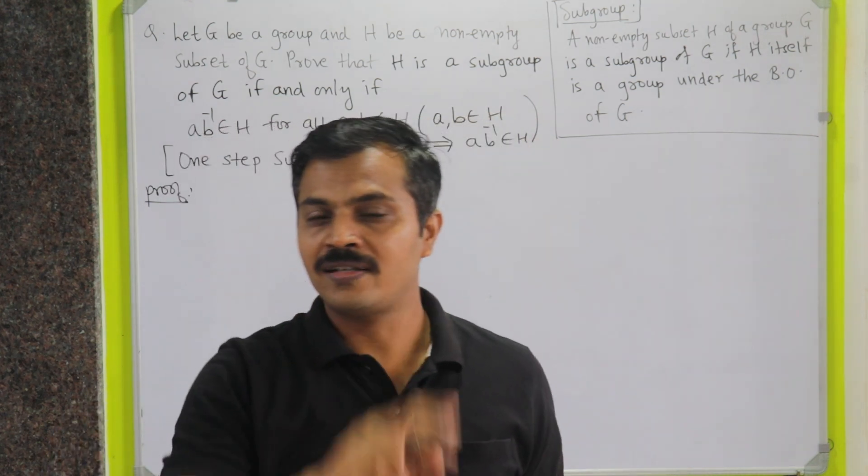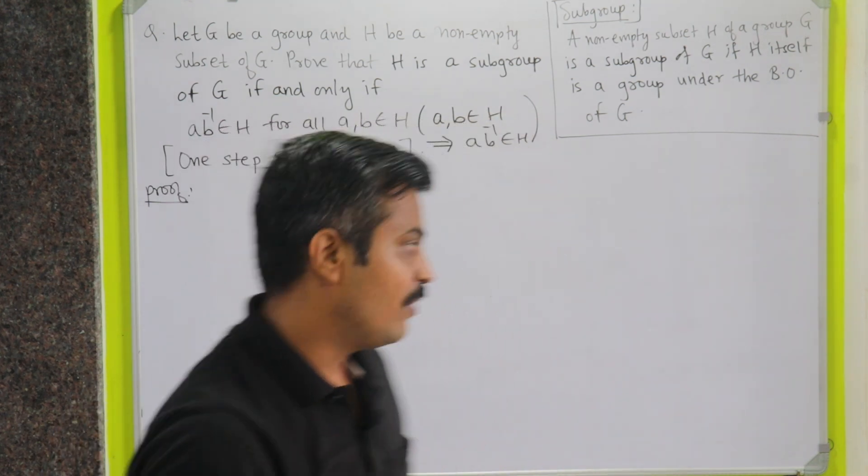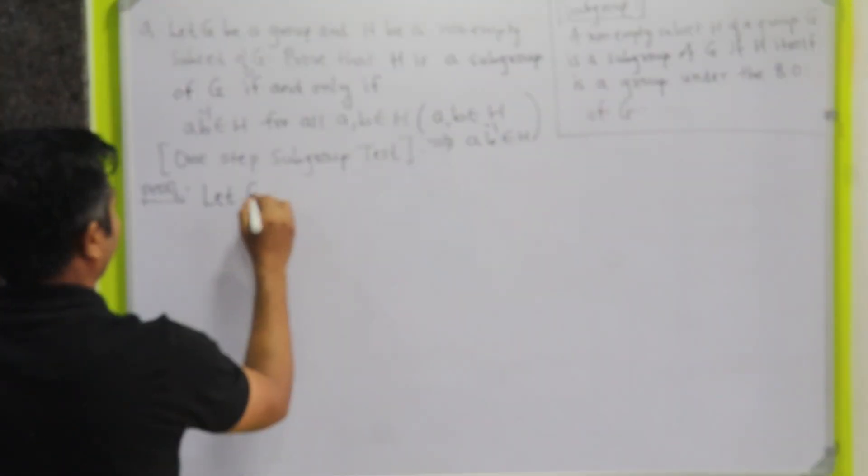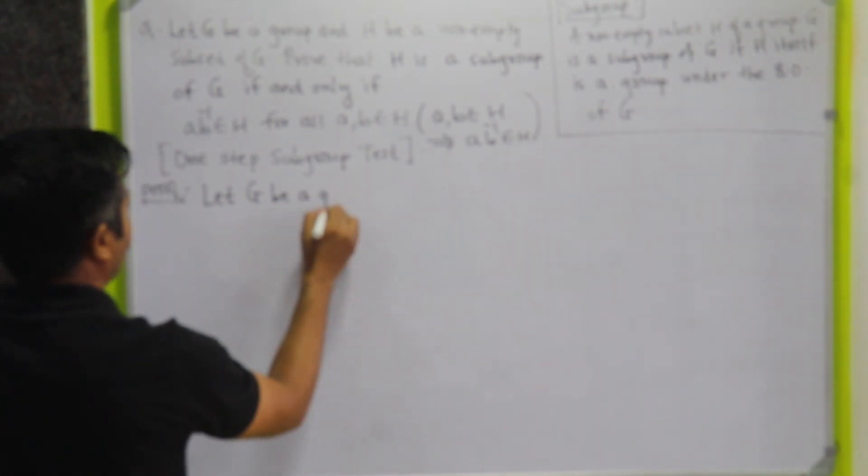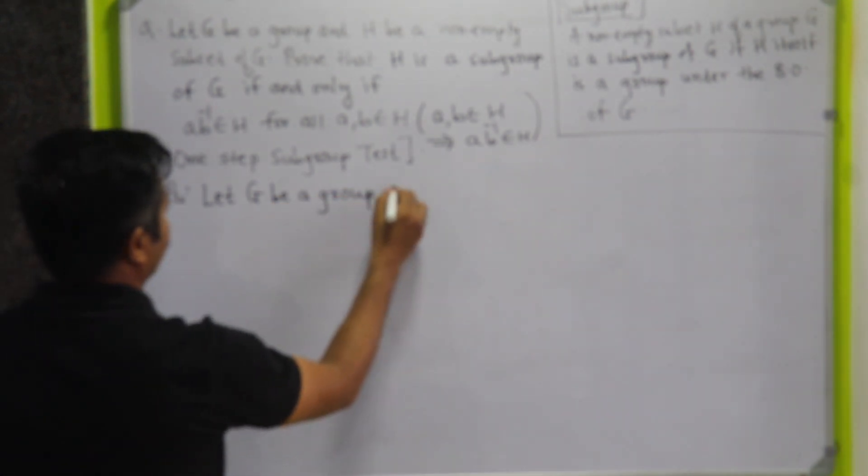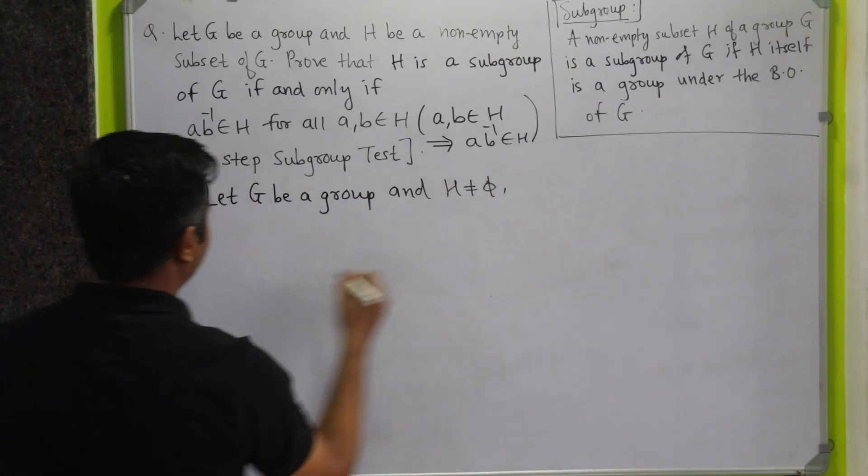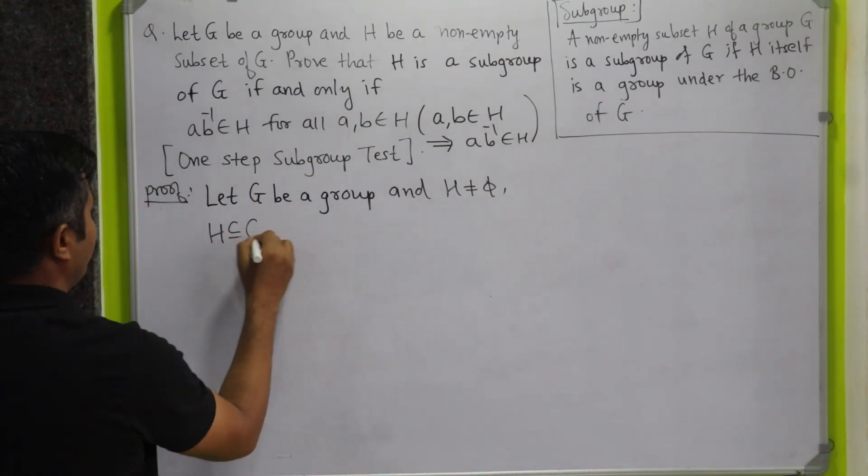So there are two parts. First of all, I will write down the given things. Let G be a group and H be a non-empty subset of G.